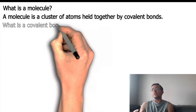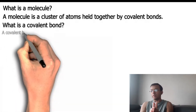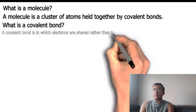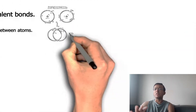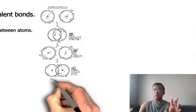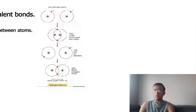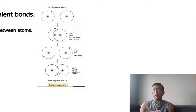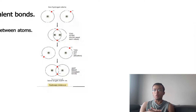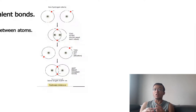What is a covalent bond? A covalent bond is one in which electrons are shared between atoms rather than being transferred. For example, looking at the picture, this is the simplest form of the atom — a hydrogen atom. Two hydrogen atoms each have one electron, and when they come together and share their electrons, that is a covalent bond, making a hydrogen molecule.